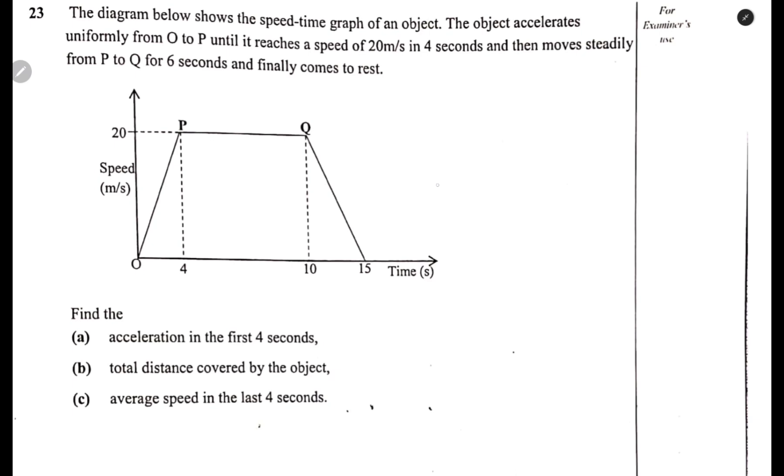The first question is: find the acceleration in the first four seconds. In the first four seconds, acceleration equals final velocity minus initial velocity divided by time. The final velocity is 20 minus initial velocity 0 (starting from rest), divided by time which is 4. So this gives us 5 meters per second squared. That is the first answer.